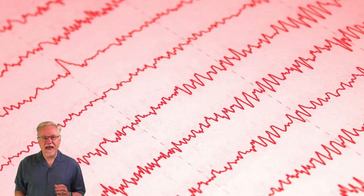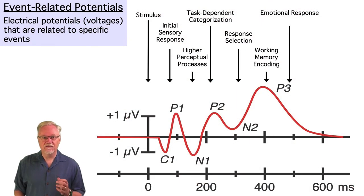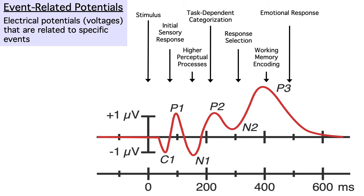But the raw EEG can't reveal the detailed neurocognitive processes that underlie thought and emotion. For that, we want to look at event-related potentials, voltages that are related to a specific event, such as a stimulus or a response. And to see the ERPs, we need to know exactly when each event happened.